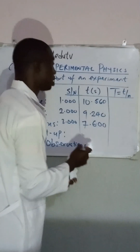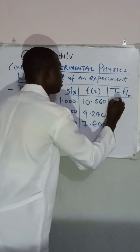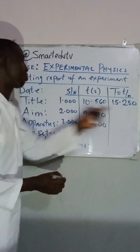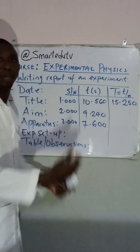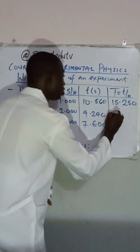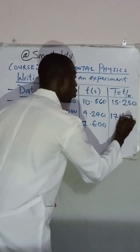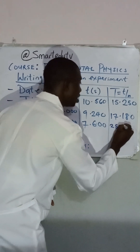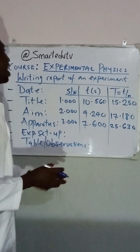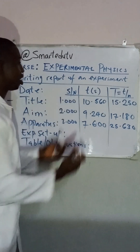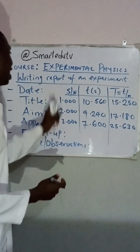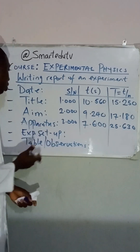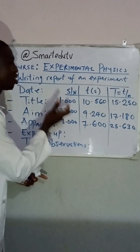For the capital T column, which is the period, let's assume we have 15.25 — then include a zero to get 15.250, so that it tallies with the other table entries. For the second one, let's assume we have 17.18 — include another zero to get 17.180. For the last one, let's assume we have 25.63 — include another zero to get 25.630, so that there will be uniformity in the table. As you can see on the board, there is uniformity — they all have the same decimal places, which are three decimal places. Please, in reporting your table or your observations, take note of this.